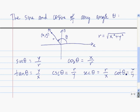So now we have the definitions of all six trig functions for any angle theta, where we find any point on the terminal side of the angle theta and use the coordinates of that point together with r to find the values of the six trig functions. Let's do some specific examples.